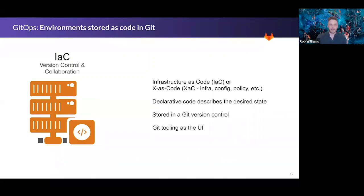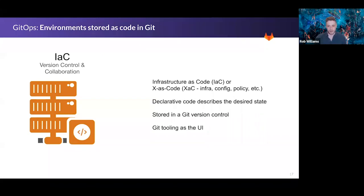Starting with infrastructure as code, you have to look beyond just the infrastructure itself. You need to look at configuration, policies, and other operations tasks as code as well. Using the declarative nature of this code, you can define the desired state for your infrastructure, store it using Git, and leverage the advantages of version control — a history of changes, localized testing, branching — using the same extensively tested tooling your development team uses.